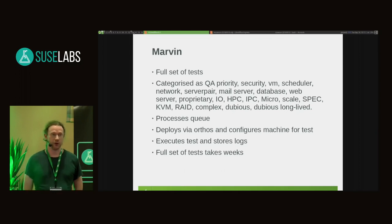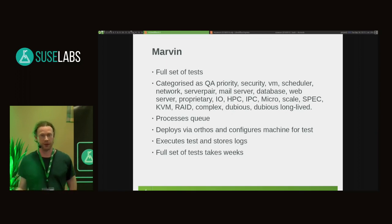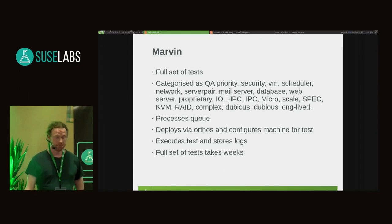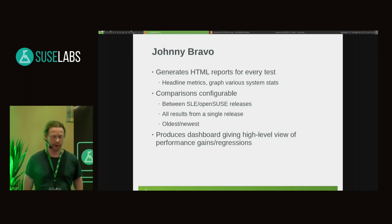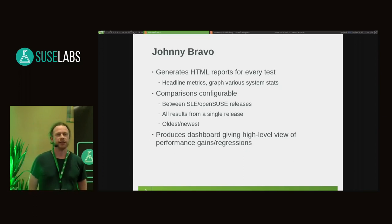The system goes through the queue and uses Orthos to deploy machines. If it's a KVM-based test, there's also KVM deploy, a helper script that comes with Marvin. If you run it, it will create a KVM instance that is almost identical to the host, so you can do KVM and bare metal comparisons. Logs are stored, and a kernel can take up to three weeks to complete the full test cycle. After that, we have Johnny Bravo — named after a vain cartoon character — which generates detailed HTML reports showing primary metrics, any variances identified, and quartile reporting for highly variable tests.